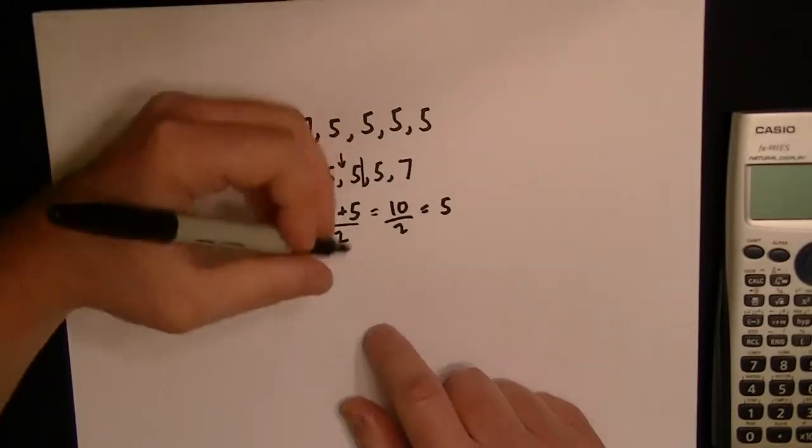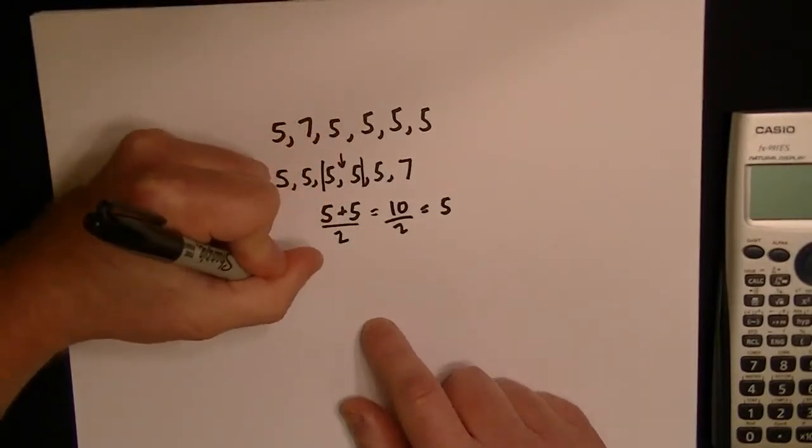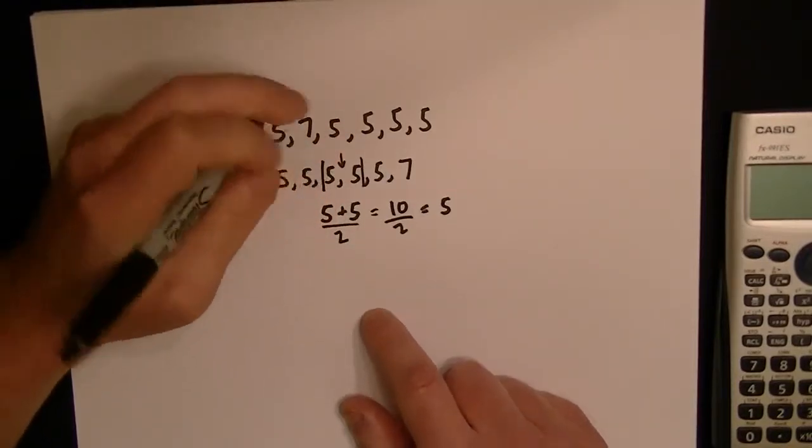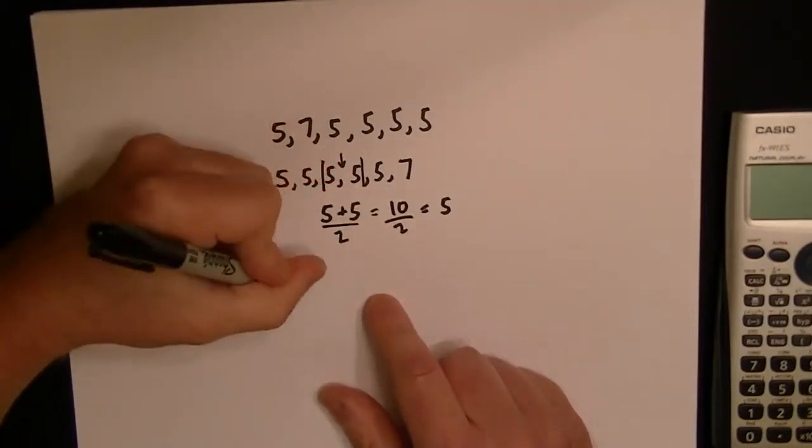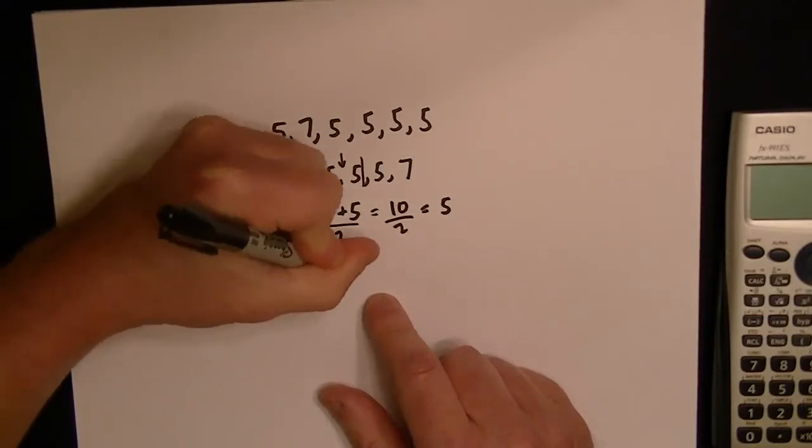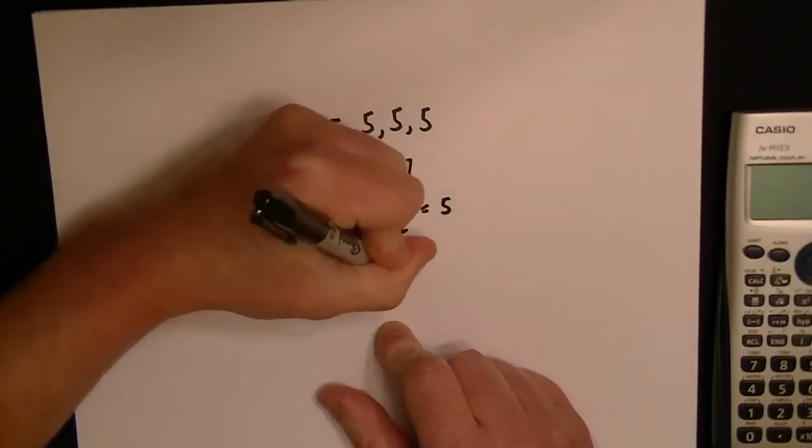But, you know, if you had, in this case, if you had some other numbers in the middle, like if you had two different numbers, let's say if the set was 5, 5, 5, 7, 7, 8 or something like that.